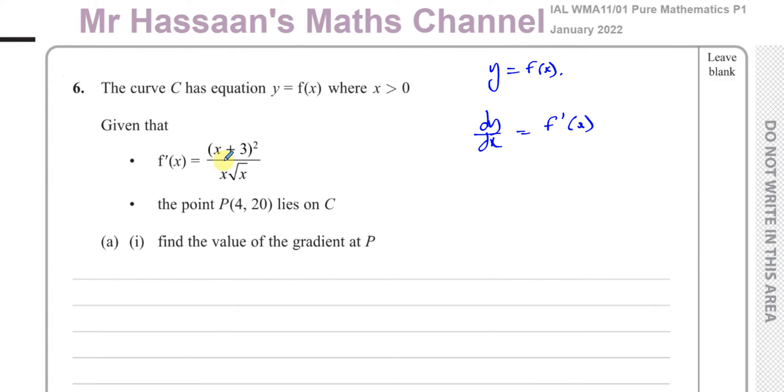This tells us the gradient of the curve at any point we want to find it. So if I want to find the gradient of the curve at P, we know that at P, x is equal to 4 because that's the x-coordinate at P. So therefore, if we find f'(4), it means we replace x with 4 in the gradient function.